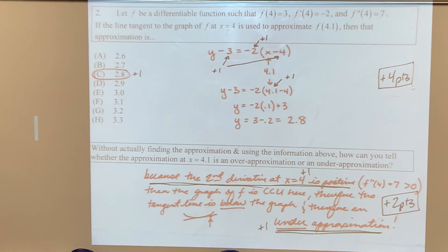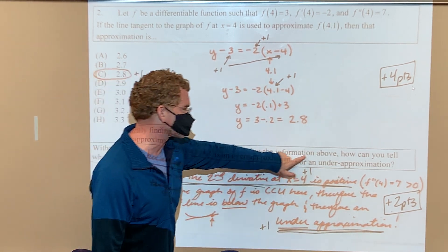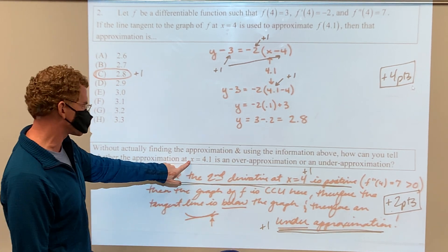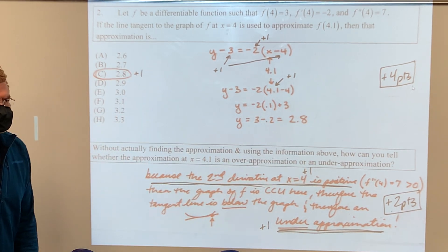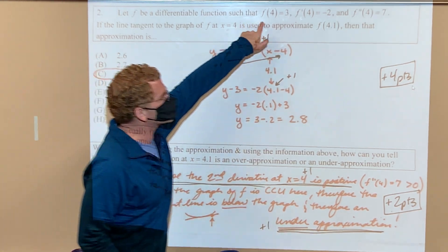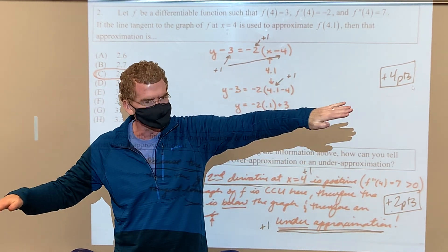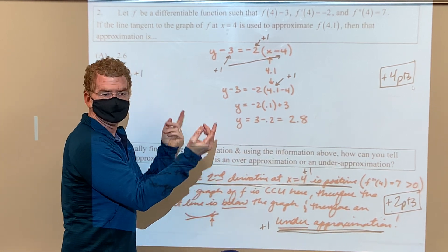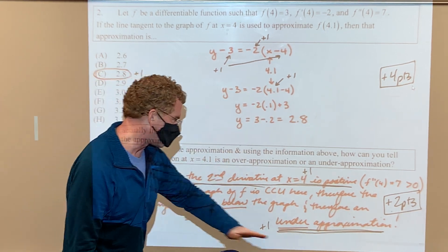The last question was—and I've asked this once before—without actually finding the approximation and using the information above, how can you tell whether the approximation at x=4.1 is an over-approximation or an under-approximation? The actual function is concaved up. Well, what does that do with the tangent line? It puts it below the function. So any approximation that the tangent line gave me would be below the actual function, since it's concaved up, which would make it an under-approximation.